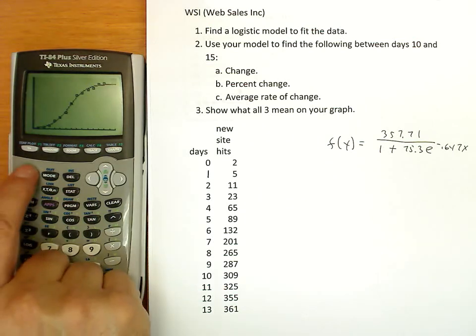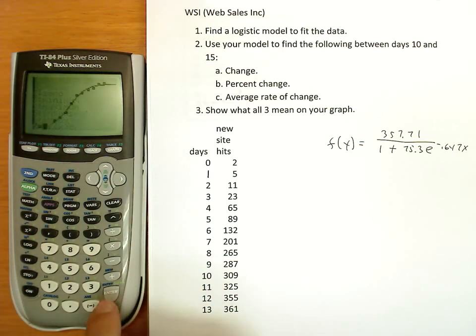So I need to know what happened at day 10. Second calc, value, x equals 10. And I'm getting 320.35.